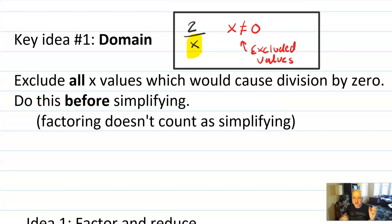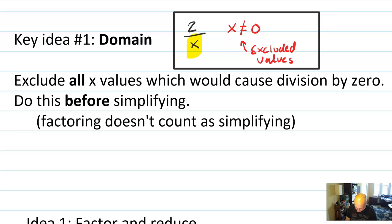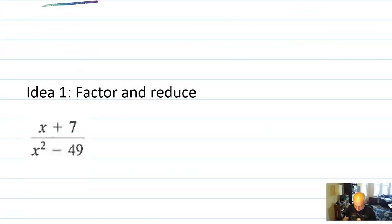The key idea is that if you're making a rational expression or simplifying one, it's not complete until you have stated the excluded values. And it's actually going to be the first thing you want to do before you do any reducing or simplifying. Factoring doesn't actually count as simplifying in this sense — so you do want to factor first and then find excluded values.